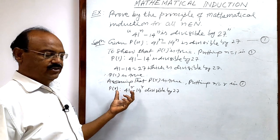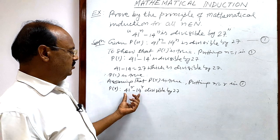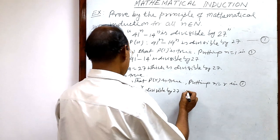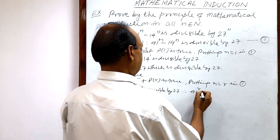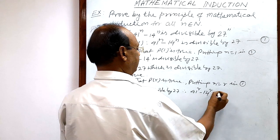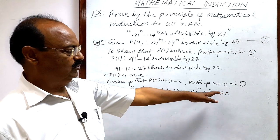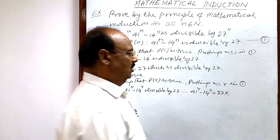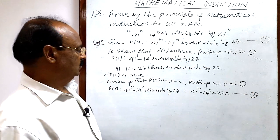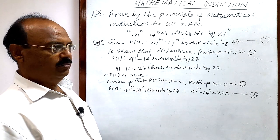Since 41^r − 14^r is divisible by 27, 27 will be a factor. So we write 41^r − 14^r = 27k, where k is a positive integer. This is relation number two. The second step is complete.